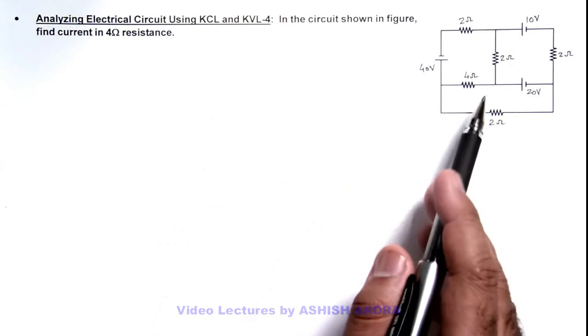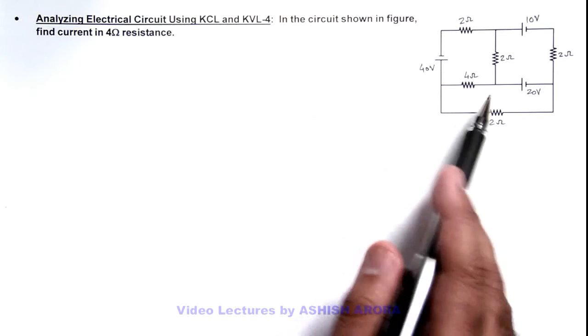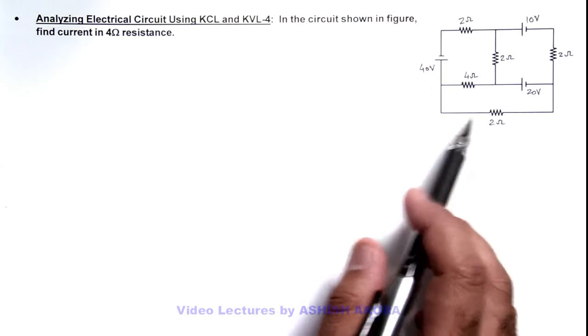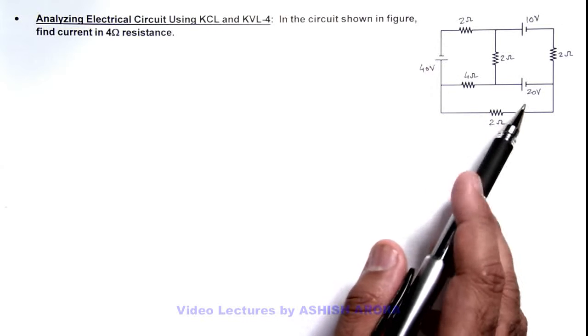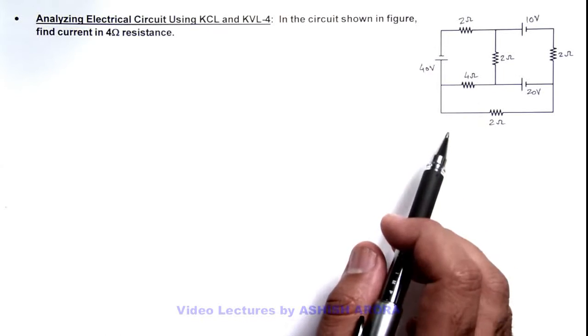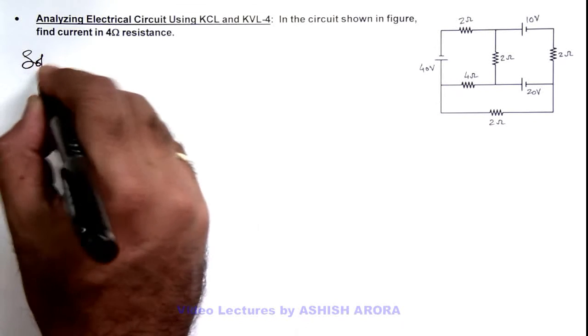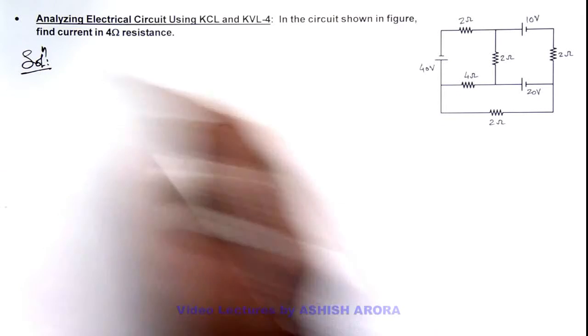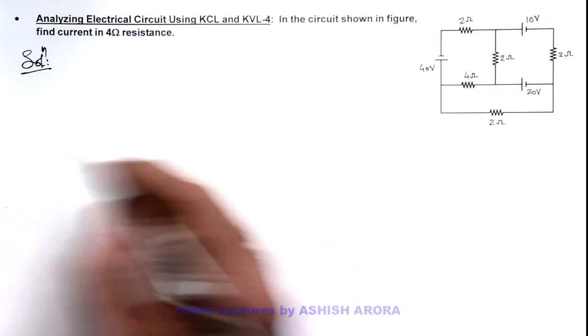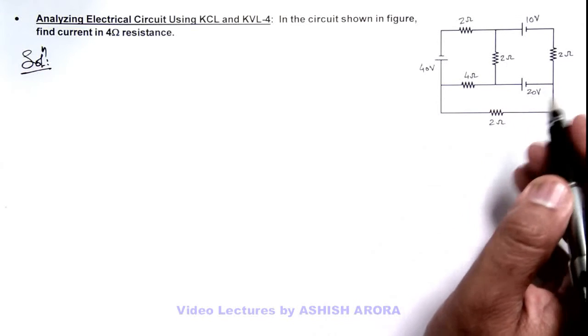Here again, if I use KVL, I need to make use of 3 equations and 3 variables in the circuit to get this current. So once again, like other problems, here also KCL will be the favorable method, for which we first need to distribute the potential.